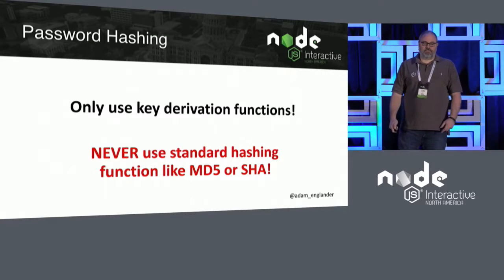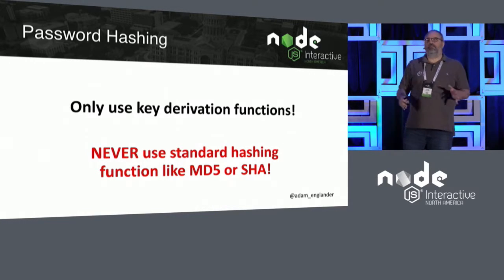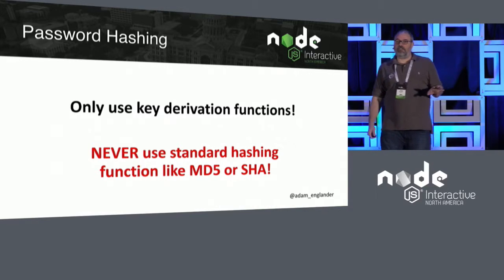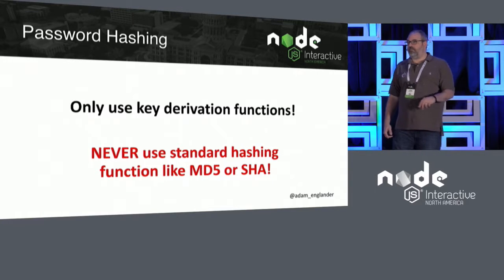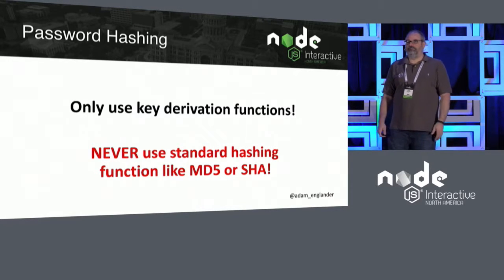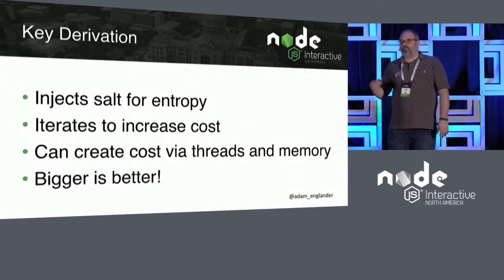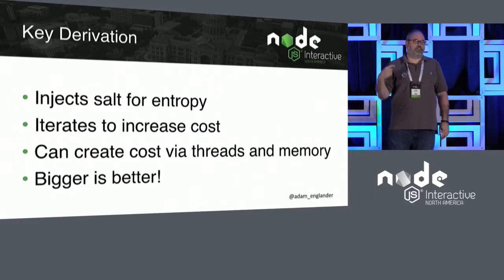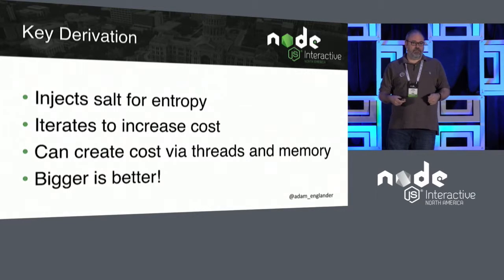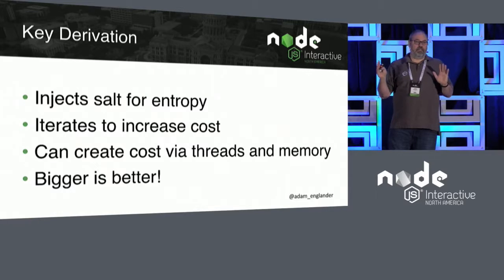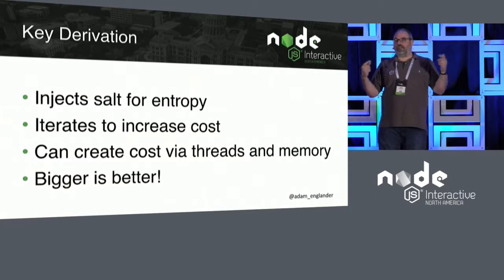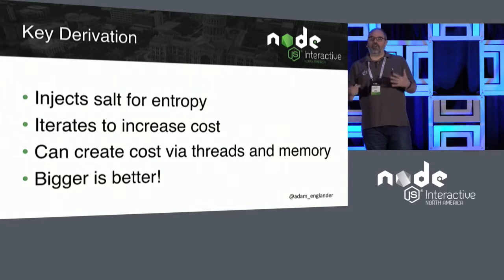Key derivation functions: never use MD5 or SHA for a password. It's very common to find this in legacy code, because 10 years ago it was considered safe — 10 years ago you didn't have 1,000 GPUs on a board that you could just use to crack passwords all day. Today, that is the case. Only use key derivation functions. They inject the salt for entropy — make sure your salt is random — and they do iterations, doing more and more hashing iterations to increase cost. The idea is to make it expensive. It's not that it can't be duplicated; it just has to be very expensive to do so. People who try to hack your site will try to get the most recent passwords, the top 100 passwords, and then they'll stop. So security-conscious users will be safe enough for you to find out you've been breached and give them the alert to change their password. That's all you're trying to do: buy time.